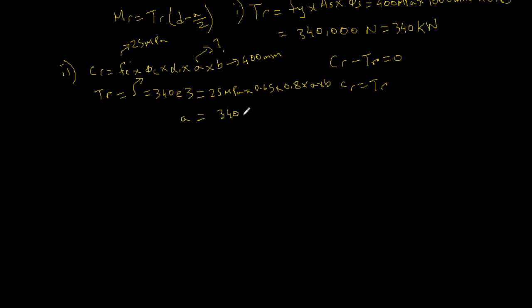We get 340E3 divided by 25 times 0.65 times 0.8 times 400 millimeters. We have to keep this in Newtons in order to get our value in millimeters. Therefore a is equal to 65.4 millimeters, or we can round it to 65 millimeters.